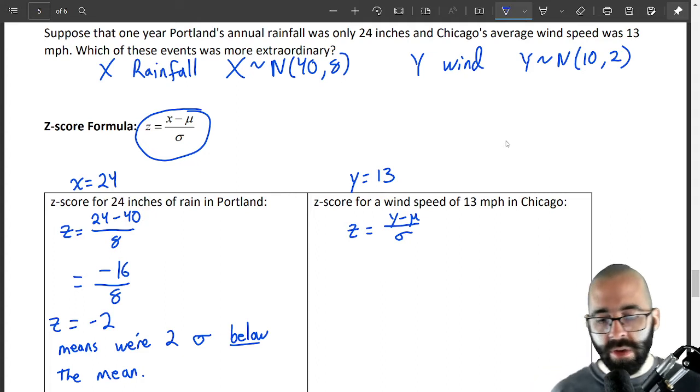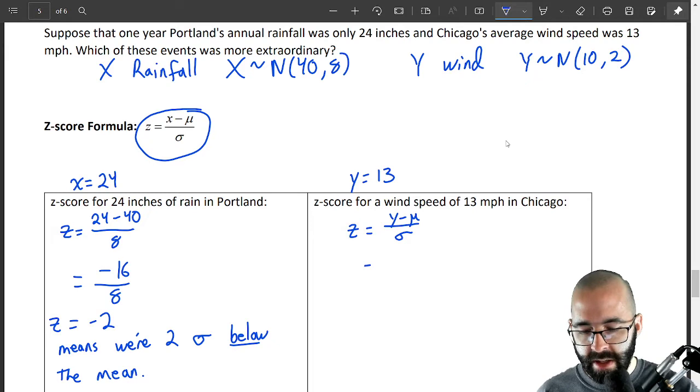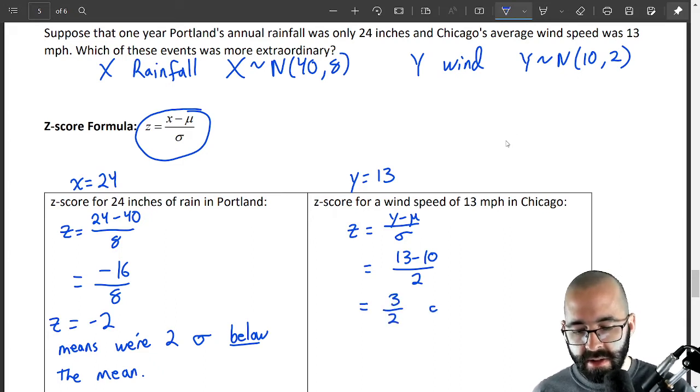So again, you can just use x for both, or you can rewrite the formula in terms of y. X, Y, up to you. Either way, it's 13 minus the mean which is 10, divided by the standard deviation which is 2. Type that into a calculator, you're going to get 3 halves or 1.5.